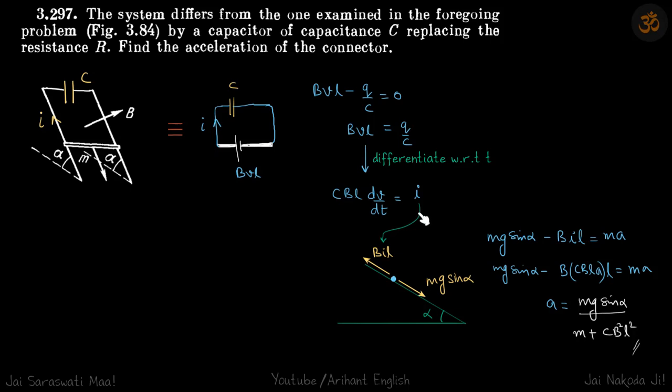So differentiating we get this equation I is equal to CBL dV by dt and dV by dt is acceleration of the rod which we are supposed to find.